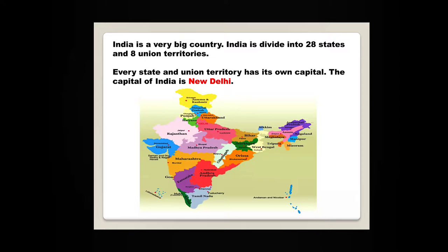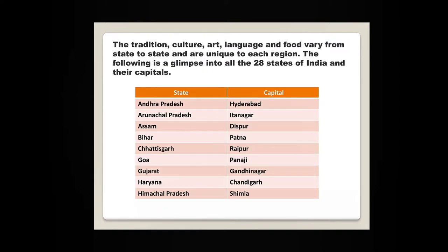The capital of India is New Delhi. The tradition, culture, art, language and food vary from state to state and are unique to each region. So as we move from one state to another, we are going to see that each state differs in their tradition, culture, art, language and food. The following is a glimpse into all the 28 states of India and their capitals.